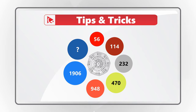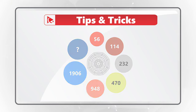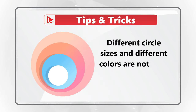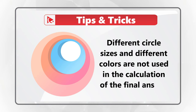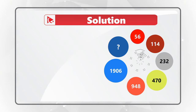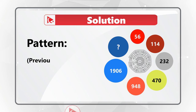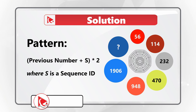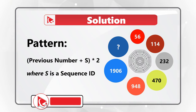The pattern is: (previous number + sequence position number) × 2. You must add the sequence number to the previous number before multiplying.